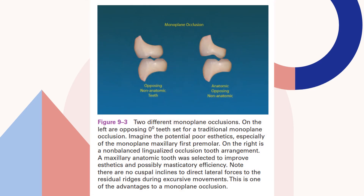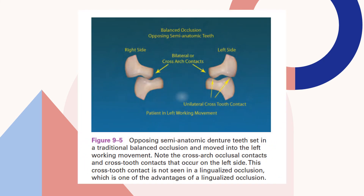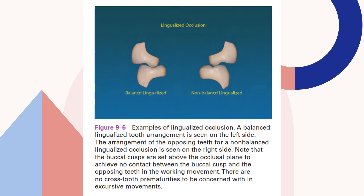These are two different monoplane occlusions — here the opposing non-anatomic teeth, and here anatomic opposing non-anatomic teeth. The opposing semi-anatomic, that is 20-degree denture teeth, arise for a lingualized balanced occlusion. Here is the right side showing bilateral protrusive contact, and the left side showing unilateral cross-tooth contact with patient in left working movement. This is an example of lingualized occlusion, showing balanced lingualized occlusion and non-balanced lingualized occlusion.